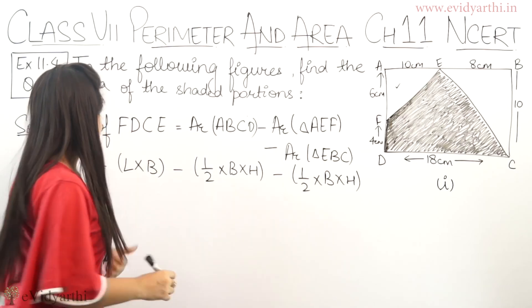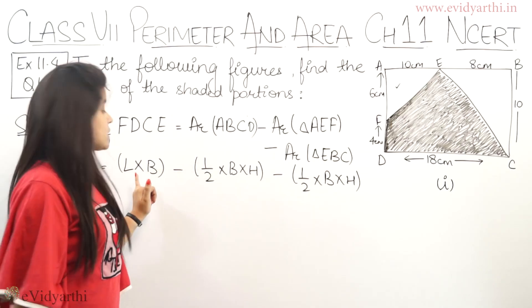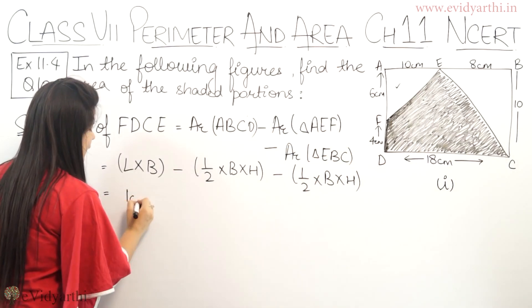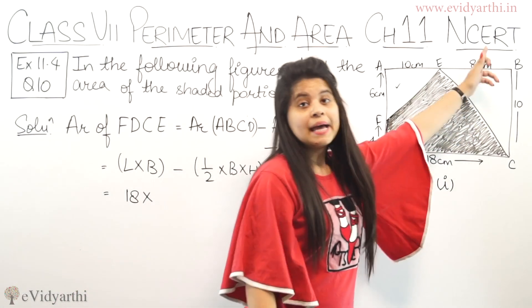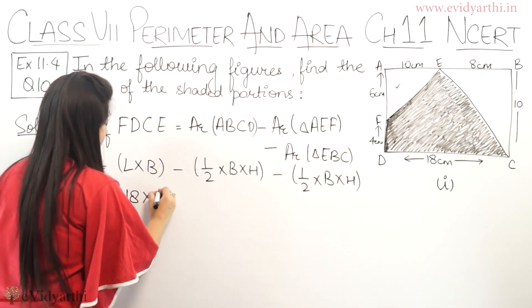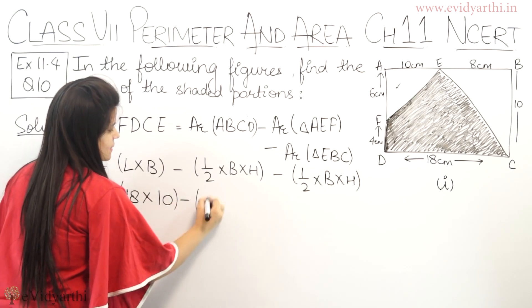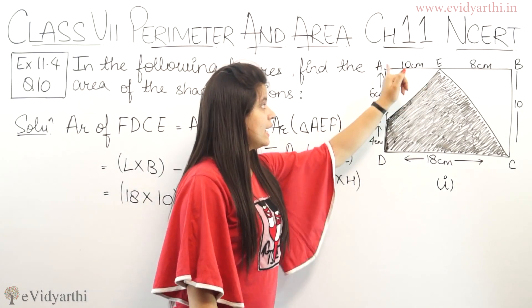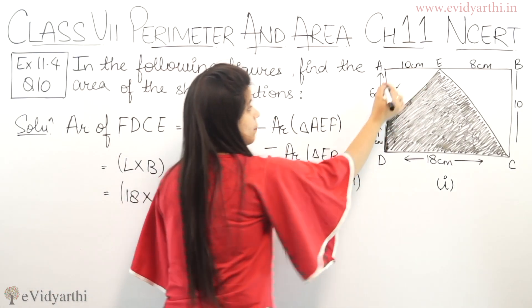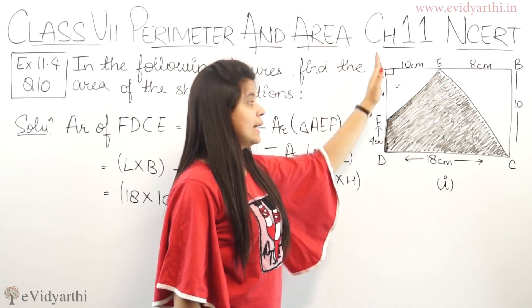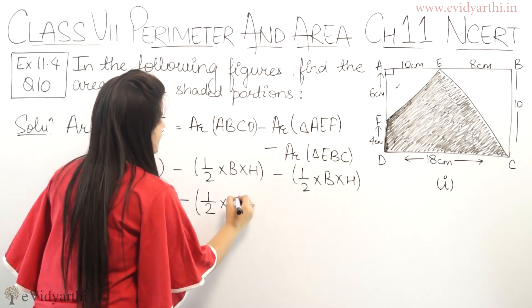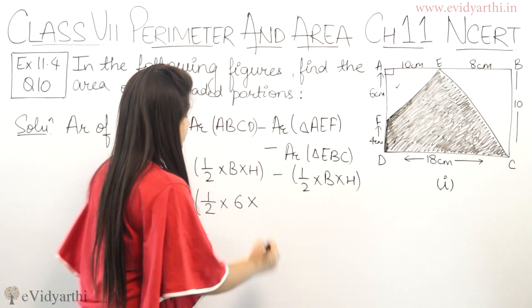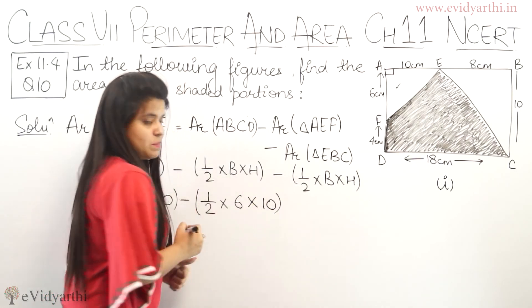Now let's put in the values. For the rectangle, length is 18 cm, breadth is 10 cm. So that's 18 into 10. Minus half into, for triangle AEF, the base AF is 6 cm and height AE is 10 cm.